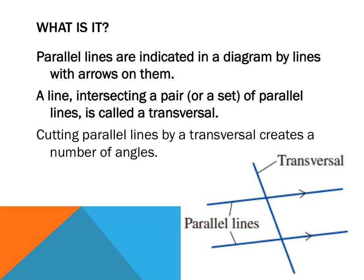Parallel lines are indicated in a diagram by lines with little arrows across them, like in the diagram down here. See these little arrows? They indicate that this line here and that line there are parallel.